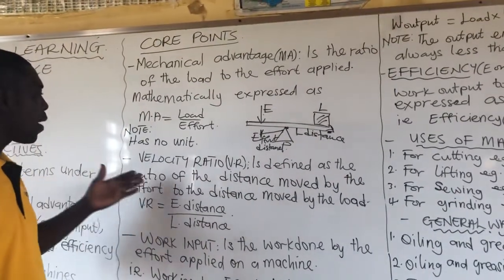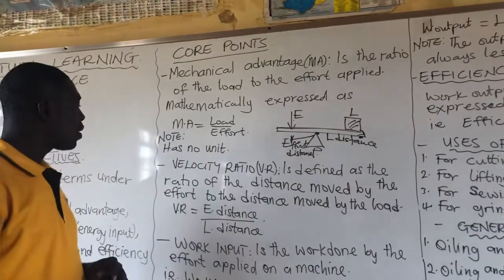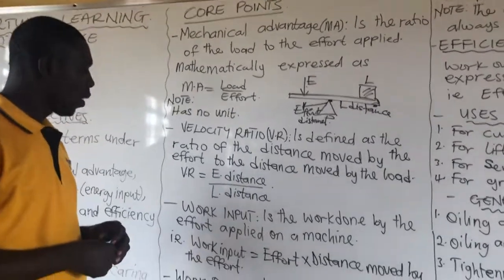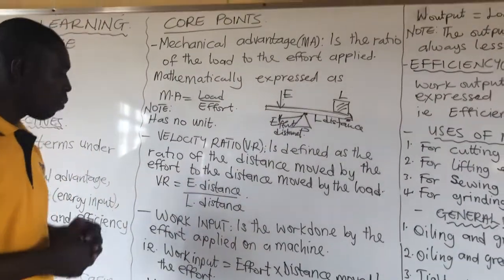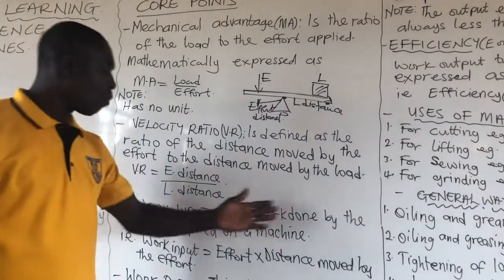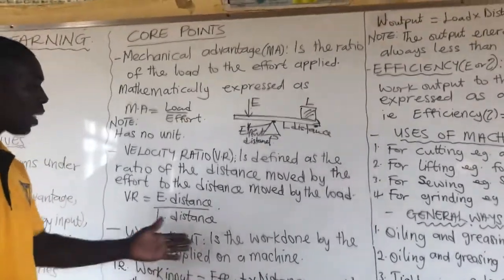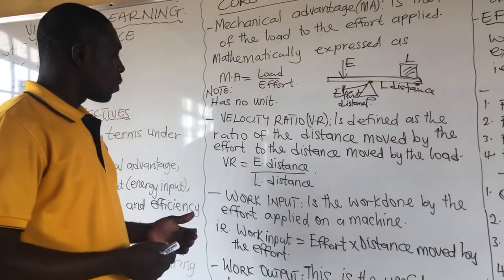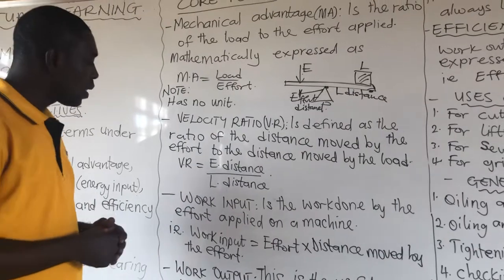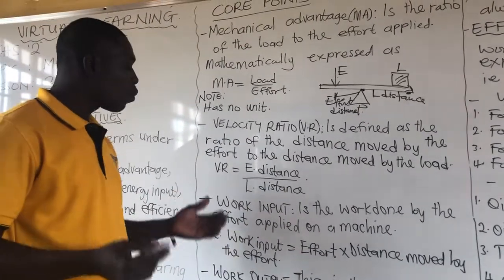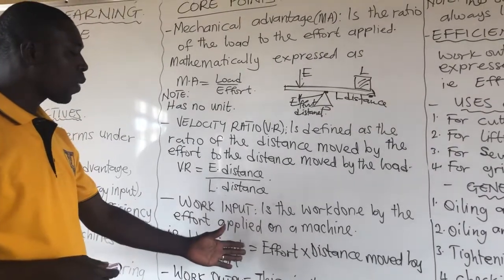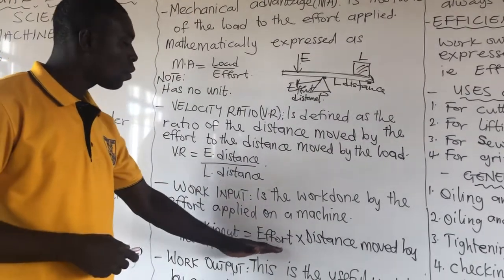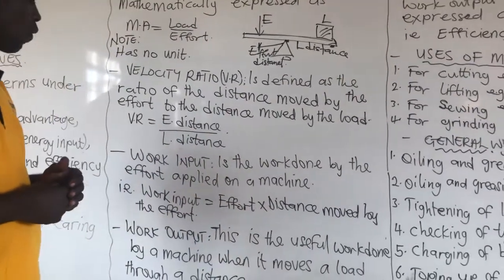So the ratio of the distance moved by the effort to that of the distance moved by the load is what we call the velocity ratio of a machine. Now, work input — what is work input? Work input is the work done by the effort applied on a machine. It can be expressed mathematically as the effort times the distance moved by the effort.